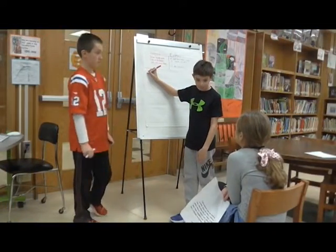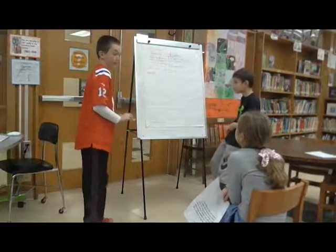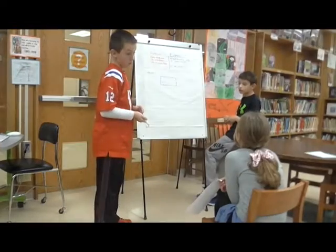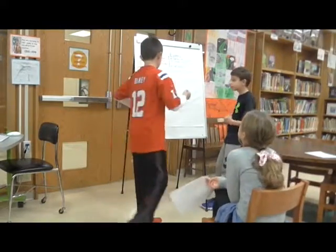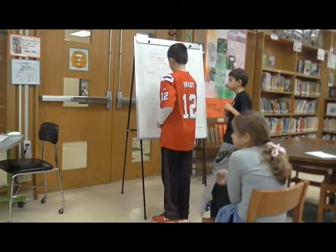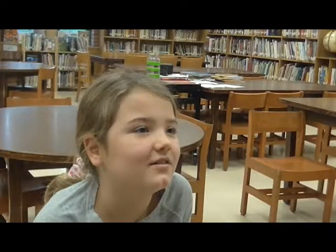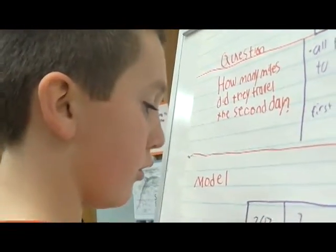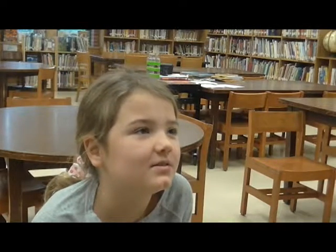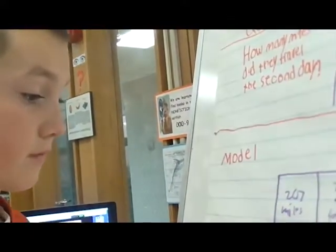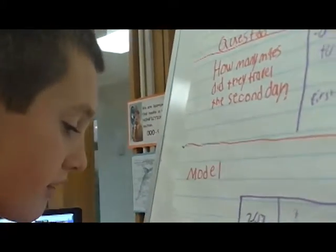Now you have to draw a model. You have to use a tape diagram. On the first day, they travel 207 miles, so we split it — 207 miles, first day. And then in the other box, I write a question mark for total miles left. And then under it, 523 miles in total.